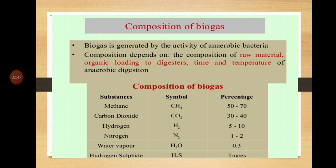The composition of biogas is a very important two-mark question for board exams. Biogas is a mixture of: methane 50 to 60 percent, carbon dioxide 30 to 40 percent, hydrogen sulfide 0 to 3 percent, and other gases such as carbon monoxide, nitrogen, and hydrogen in traces. This composition may vary depending on the raw materials used.